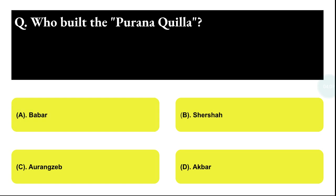Next question: who built the Purana Qila? Option A: Babur, Option B: Sher Shah, Option C: Aurangzeb, Option D: Akbar. The correct answer is option B, that is Sher Shah.